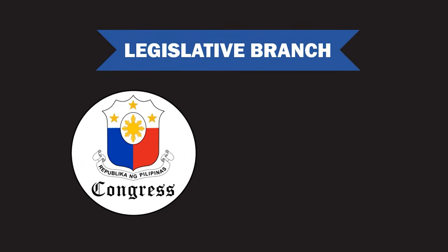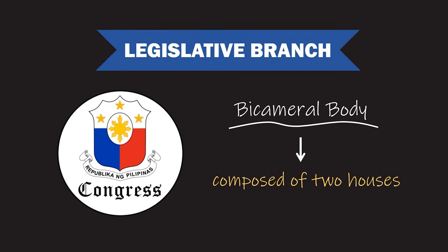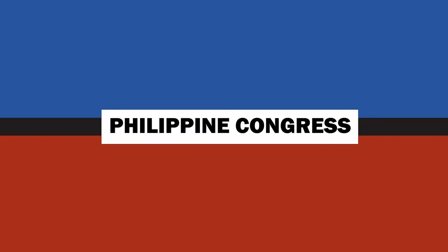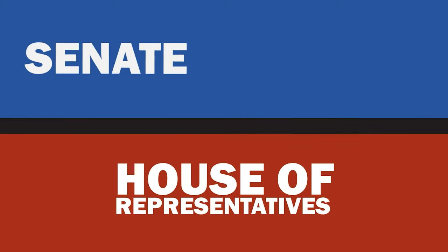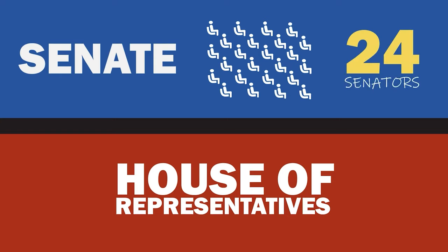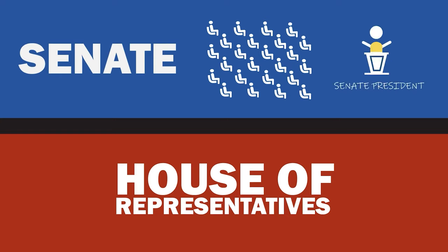Congress is a bicameral body, meaning it is composed of two houses. The upper house is called the Senate, composed of 24 senators and headed by the Senate President. On the other hand, the lower house is called the House of Representatives.